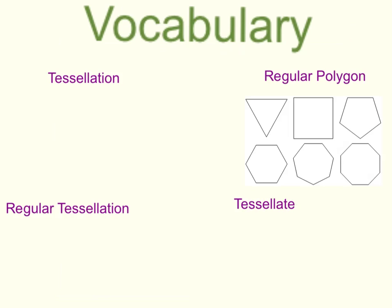Regular polygon. This is a polygon in which all sides are the same length and all angles have the same measure. Notice, you see an equilateral triangle, and you see a square, and then there are a few other shapes. There's a pentagon, a hexagon, a septagon, and an octagon that are all also regular polygons.